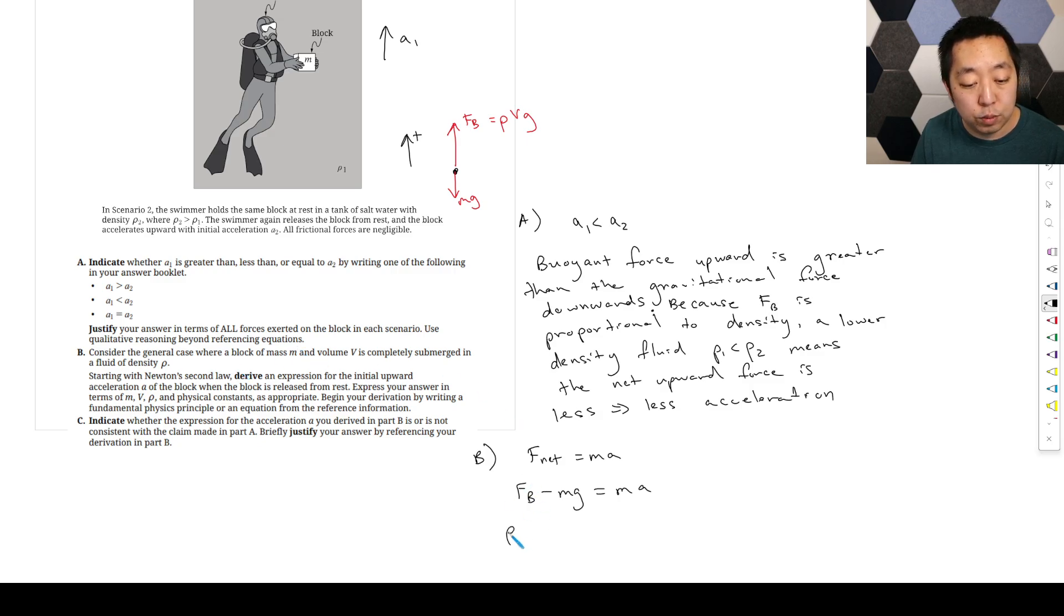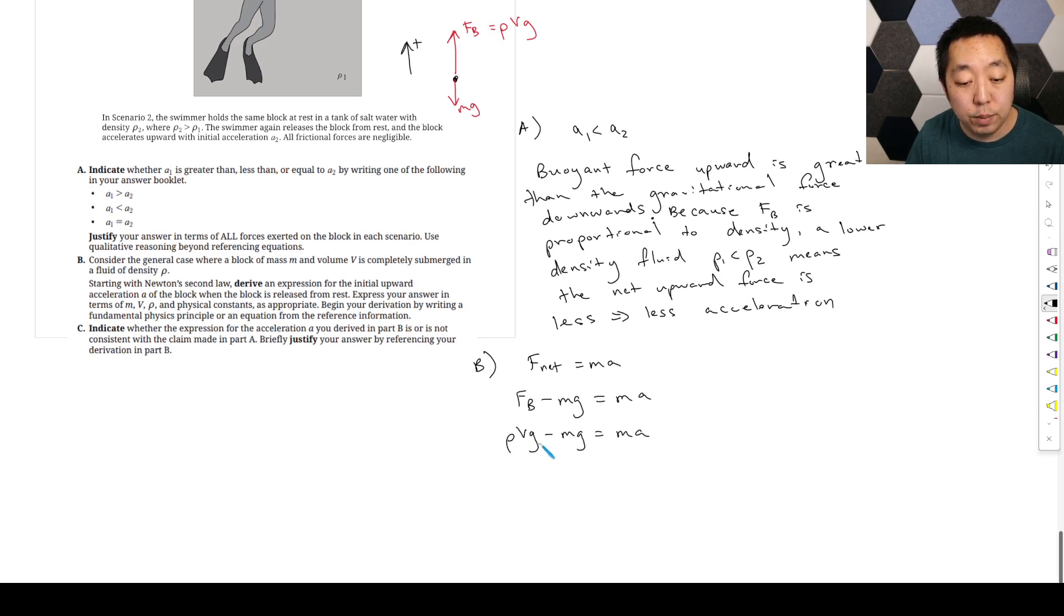So then we have buoyant force minus MG equals MA. The buoyant force is rho VG, so rho VG minus MG equals MA. It's completely submerged, so it's the volume of the block itself. Then you just divide by M to get the acceleration.